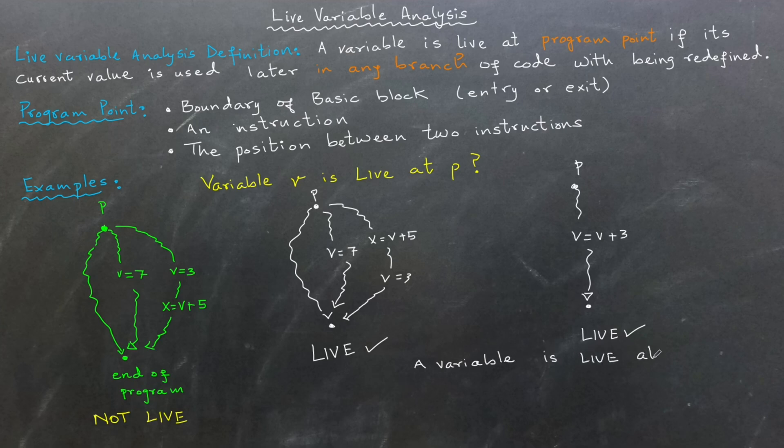Based on these examples, we can redefine live variable at point P as follows: A variable V is live at P if its value at P is read by any of the branches of code after P.